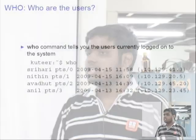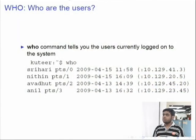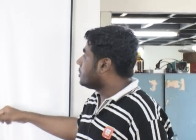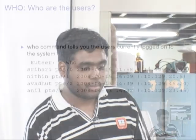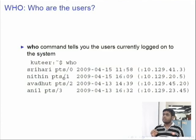The next command is who. Since Unix is a multi-user environment, many users can log into the system. If you want to know who is currently logged in, type who. It will show which users are logged in, along with the IPs of their machines. When a user logs in, the system creates a device file under /dev by name pts/0, pts/1, pts/2 assigned to that terminal.